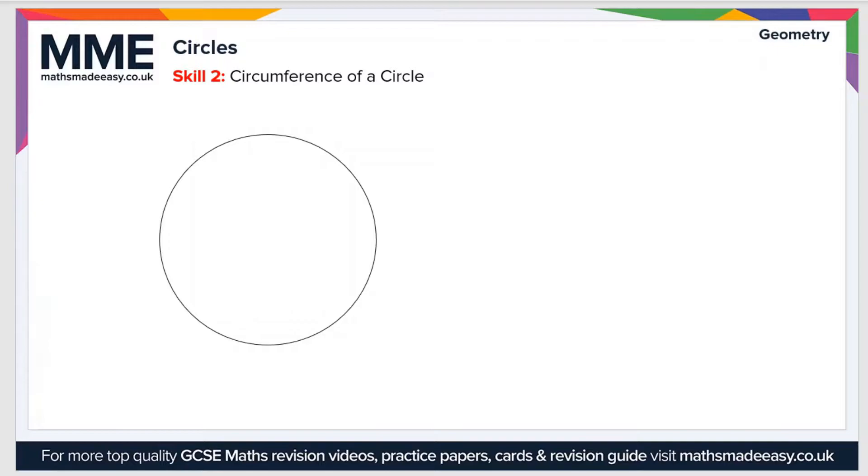So moving on to skill two, now we're going to be looking at the circumference of a circle. Let's just remind ourselves what the circumference is. The circumference is the distance around the edge of the circle, so it's the whole length of the edge of the circle essentially.